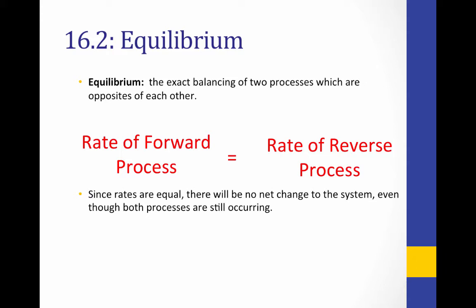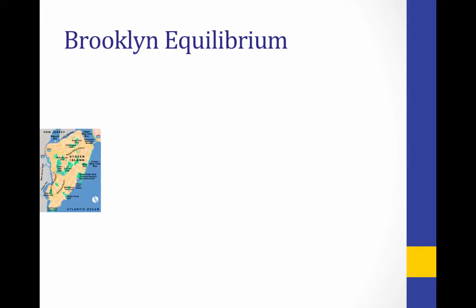Consider the population of New York, for example. If the rate of people moving out is equal to the rate of people moving in, we'll always have a constant population. However, both the moving out and moving in processes will still be going on, but their rates are equal so there's no net change to the population.